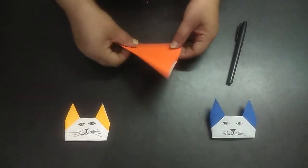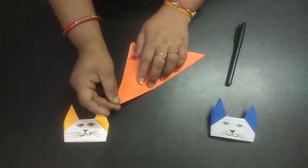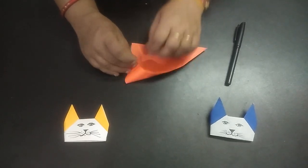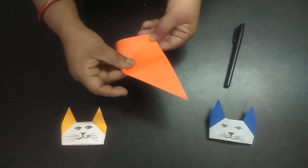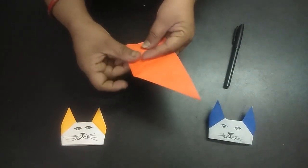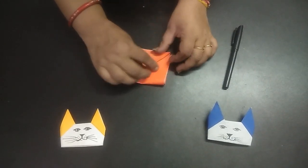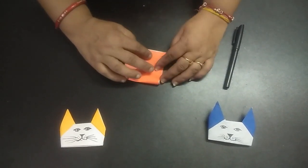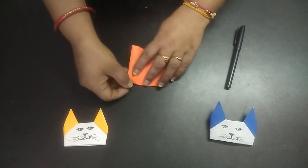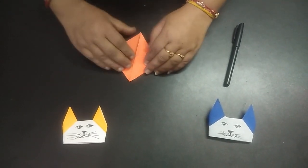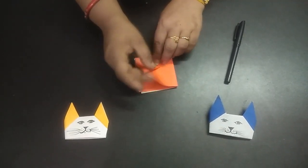Now hold this corner, the folded side, and just keep it on to this one. Crease it nicely. Fold this corner, fold here, crease it nicely.